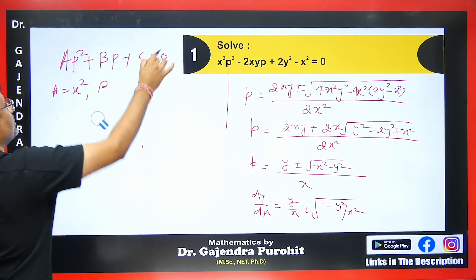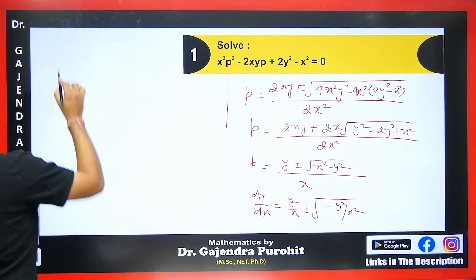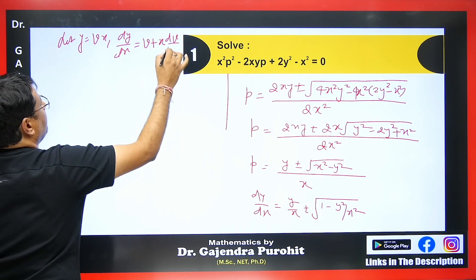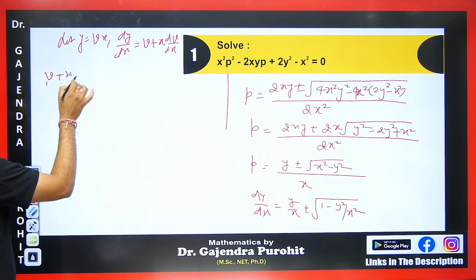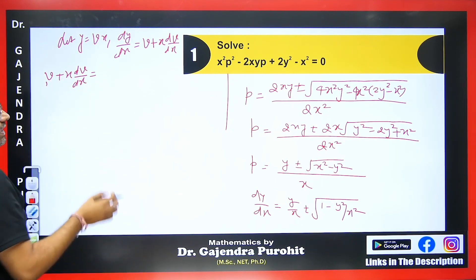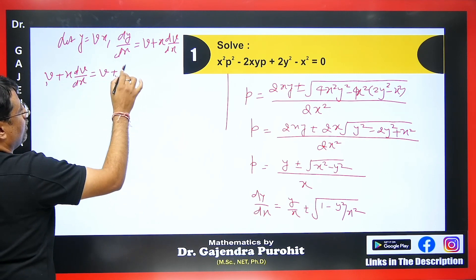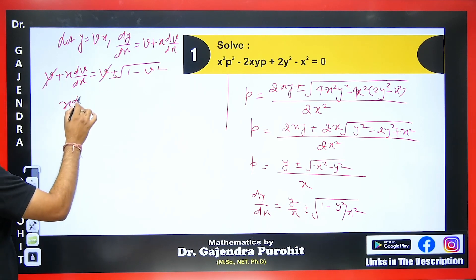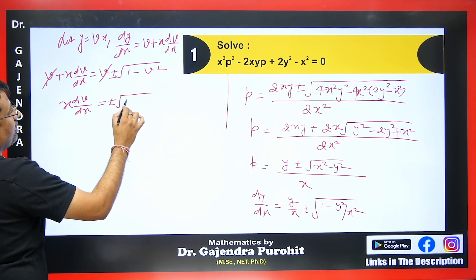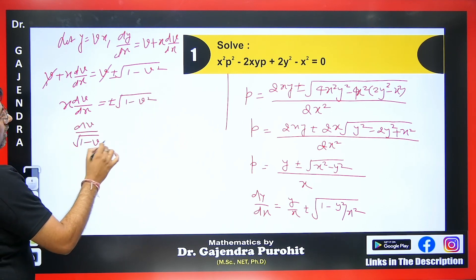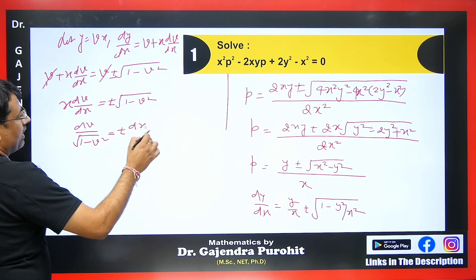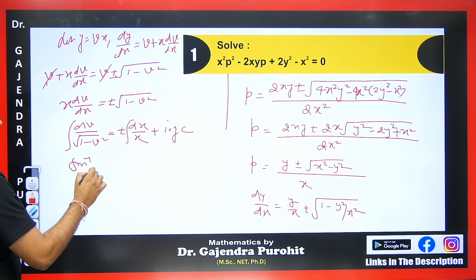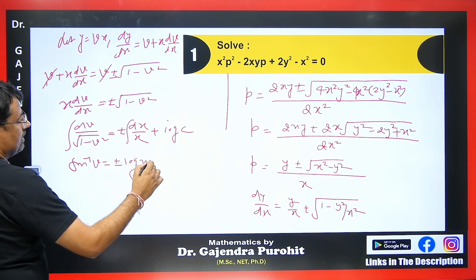Let y = vx, then dy/dx = v + x·dv/dx. Substituting this value, wherever y appears we put vx. After x cancels, we get: v + x·dv/dx = v ± √(1 − v²). The v terms cancel, leaving x·dv/dx = ± √(1 − v²). Separating variables: dv / √(1 − v²) = ± dx/x. Integrating both sides plus log c, the integration gives sin⁻¹(v) = ± log x + log c.